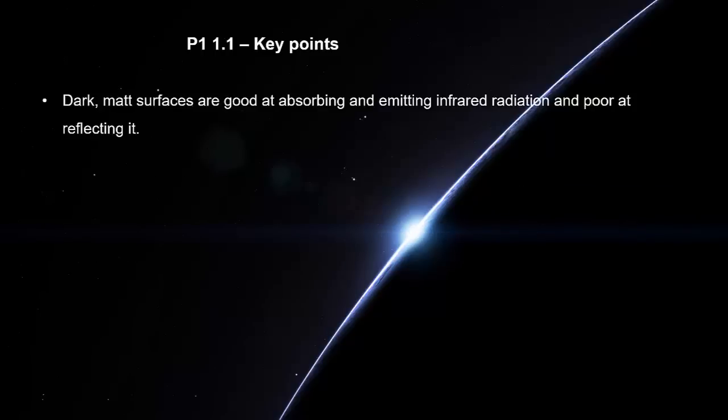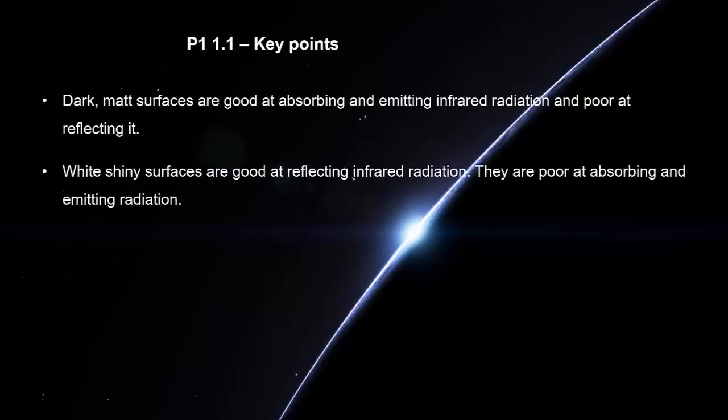Dark matte surfaces are good at absorbing and emitting infrared radiation and poor at reflecting it. White shiny surfaces are good at reflecting infrared radiation. They are poor at absorbing and emitting radiation.